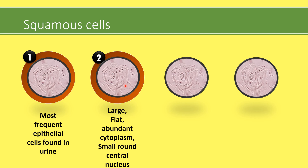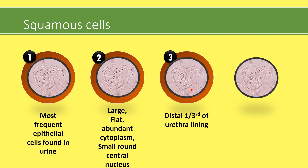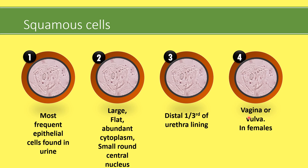We should ask ourselves: where did these squamous cells come from in the urine? As we know, the distal one-third of the urethra is lined by squamous epithelium — that's why we have shedding of squamous cells from this area. Also, in females, the vagina or vulva is lined by squamous cells, and that's where they are shed from.